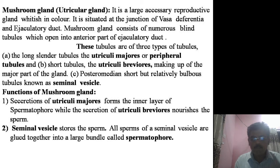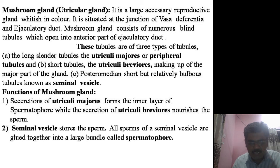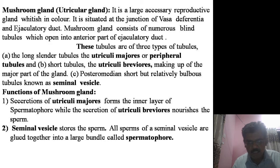Observing the structure of the utricular gland or mushroom gland, it has three types of tubules. The peripheral tubules are long and slender and are called utricular majoris. The short tubules which make the major part of the gland are called utricular minoris. The last portion is a relatively bulbous part called the seminal vesicle.